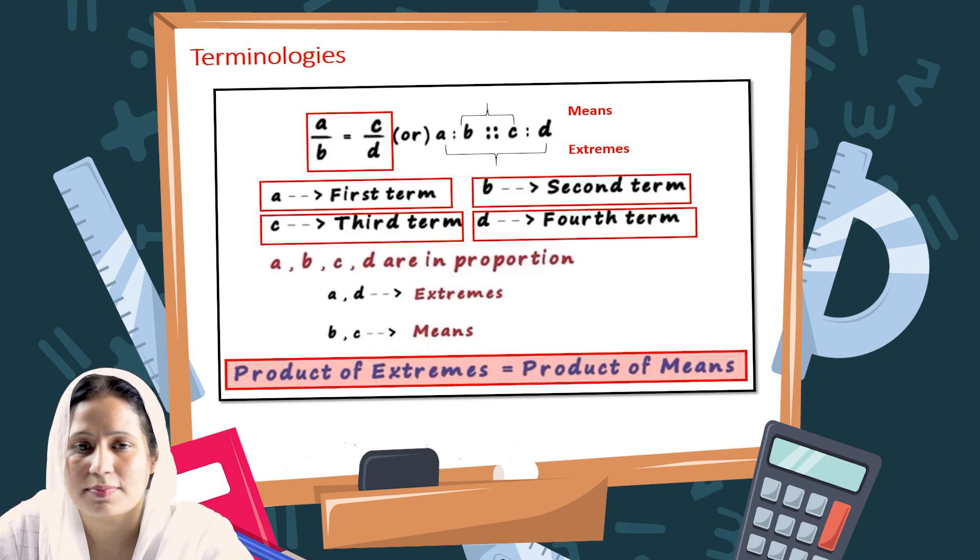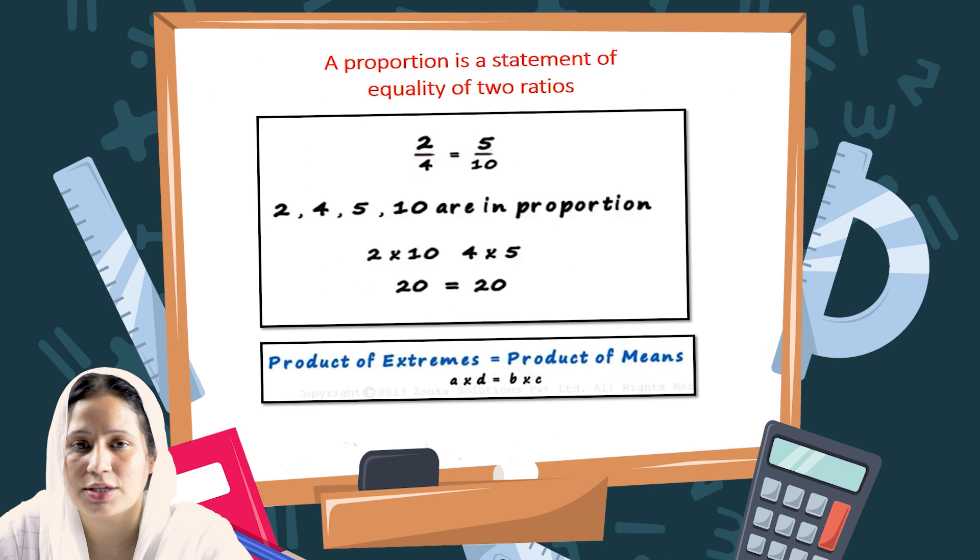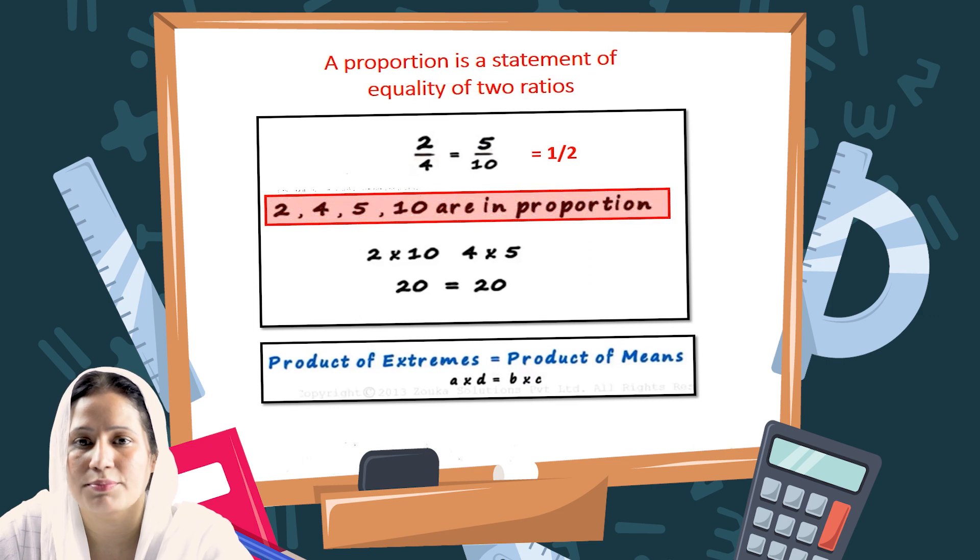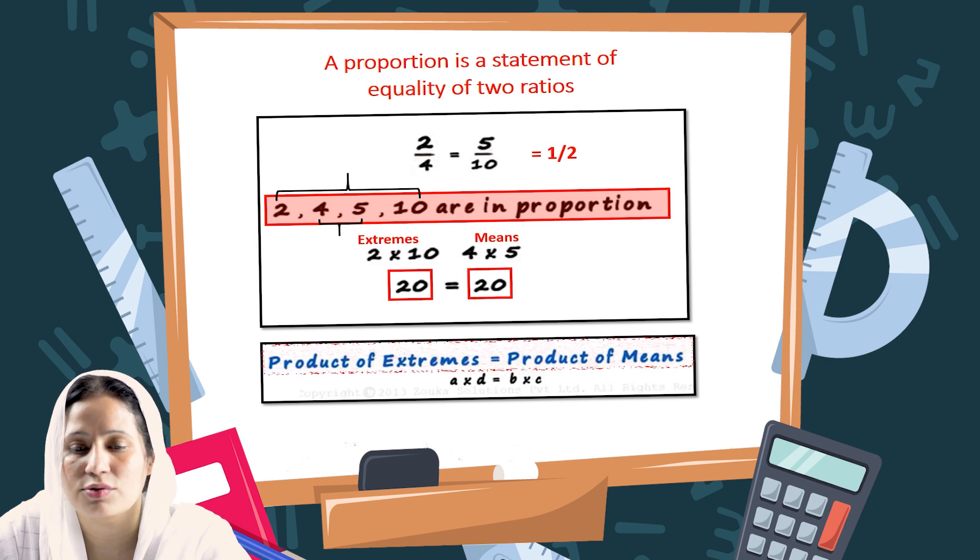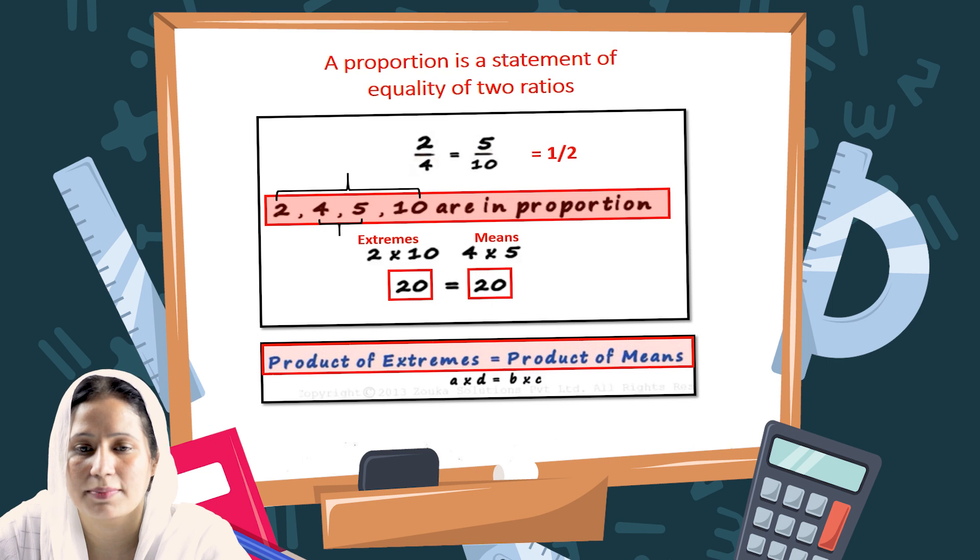With a couple of examples, you can understand this concept easily. We have two fractions: 2 by 4 and 5 by 10. They are equal to 1 by 2. 2, 4, 5, 10 are in proportion. When we multiply the extreme values 2 and 10, we get 20. And when we multiply the middle values 4 and 5, we get 20. It means the answer is the same: 20 equals 20. Product of extremes equals product of means: a multiplied by d equals b multiplied by c.